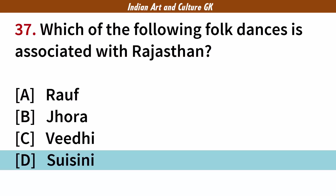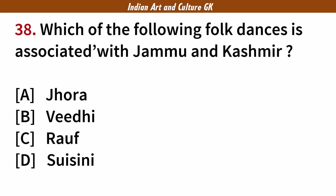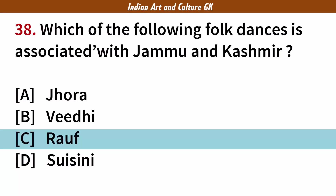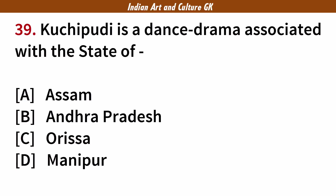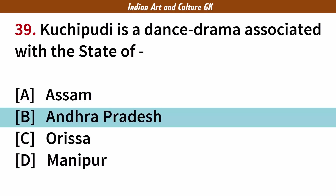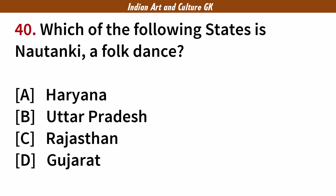Which of the following folk dances is associated with Jammu and Kashmir? Answer: C. Rouf. Kuchipudi is a dance drama associated with the state of? Answer: B. Andhra Pradesh. Which of the following states is Nautanki a folk dance? Answer: B. Uttar Pradesh.